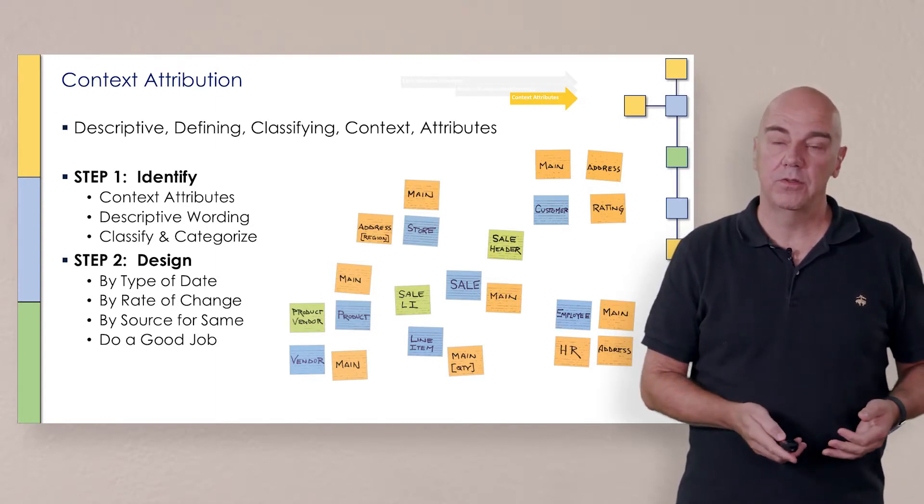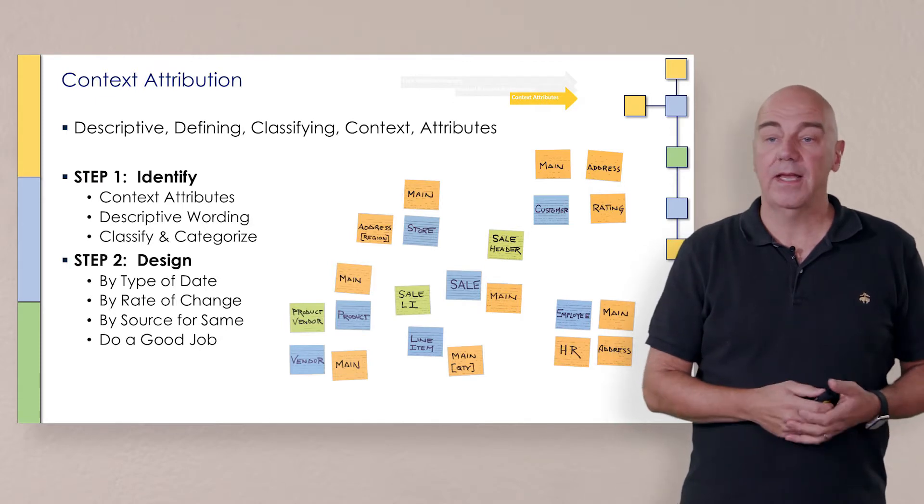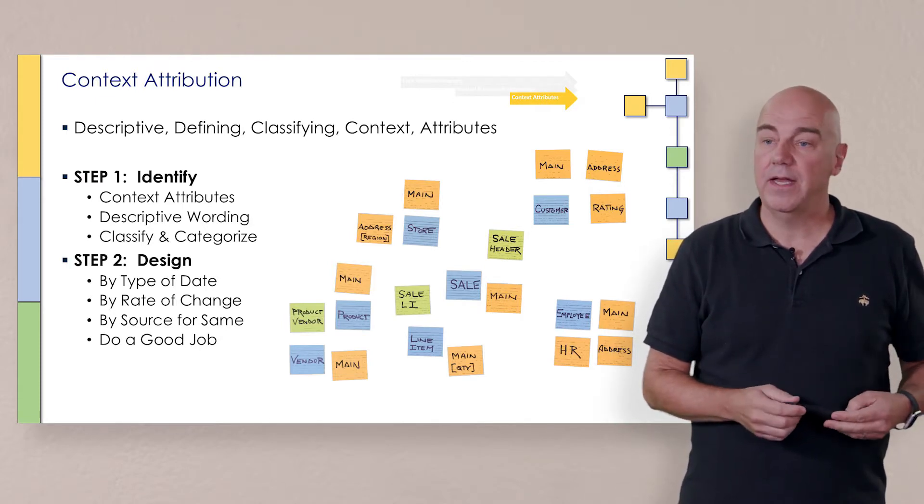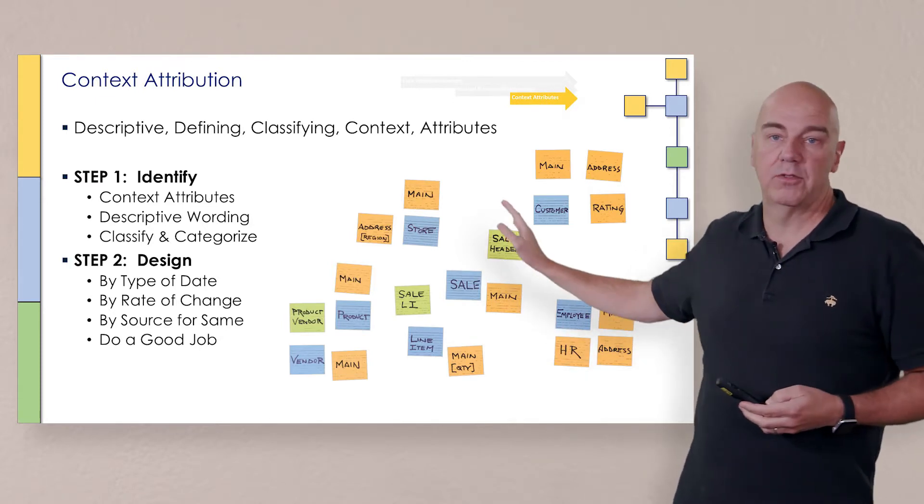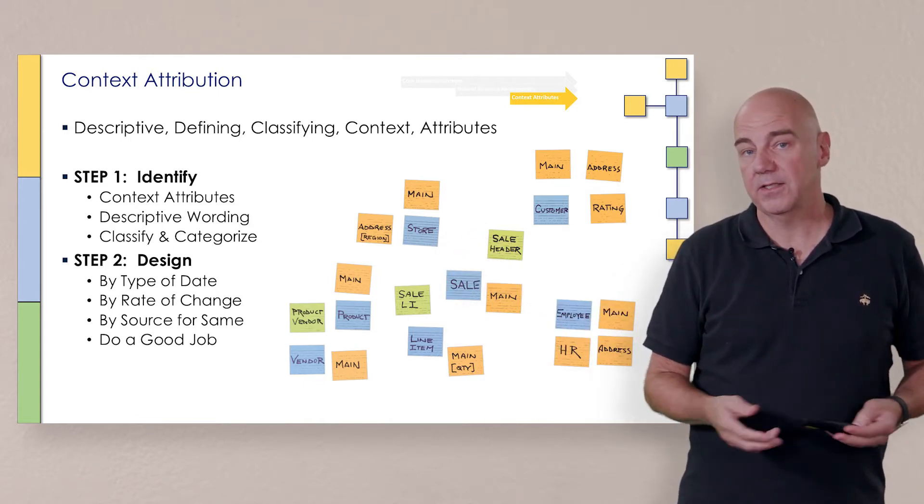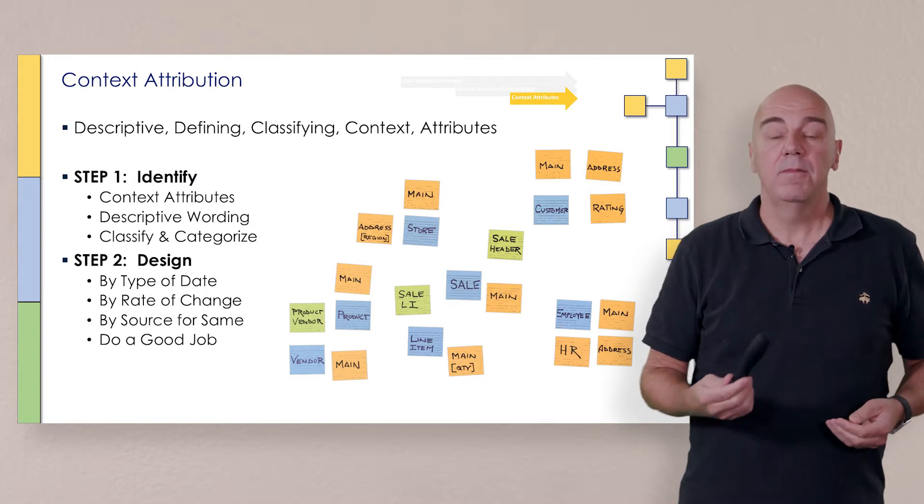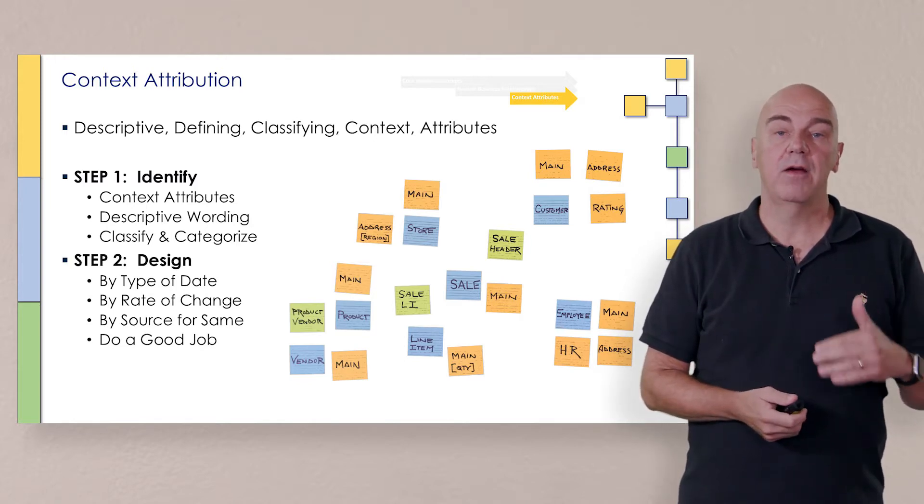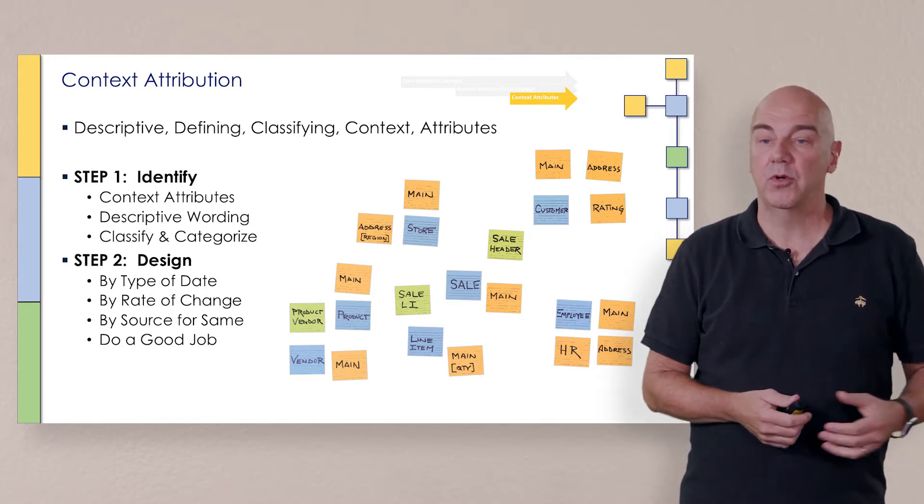Once we get into the satellite attribution that we just went through, now defining what types and groupings of information will describe and provide context for each of those core business concepts, now we need to start considering how we're also going to store it and how these things are broken apart.